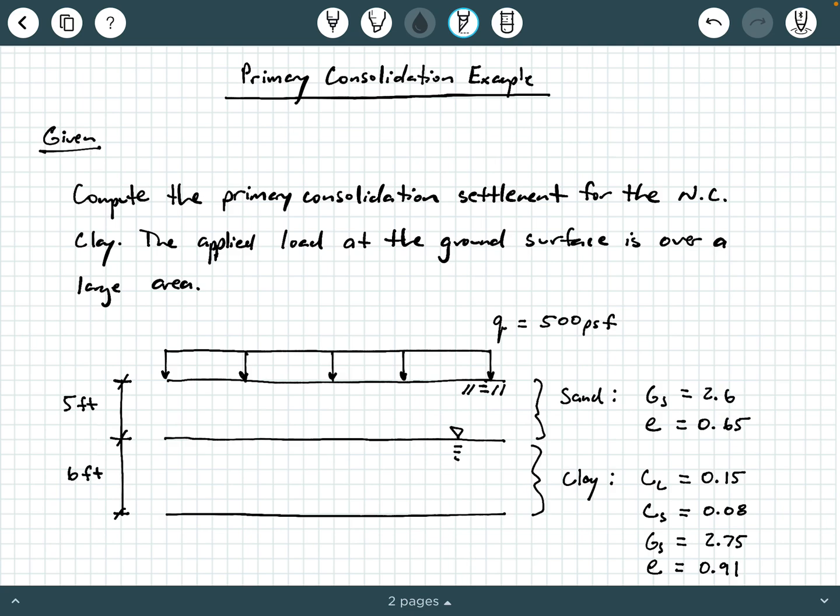So let's look at the given information. We're being asked to compute the primary consolidation settlement for the NC clay, and we need to remember that NC means normally consolidated. And we're also being told that the applied load at the ground surface is over a large area. So what this phrasing means is that when we eventually calculate the applied load in the clay layer, we do not need to account for stress dissipation. That means we do not need to use Boussinesq's method or 2-to-1 method since the applied load is over a large area at the ground surface.